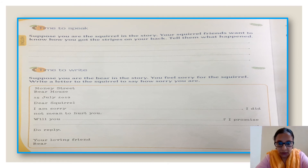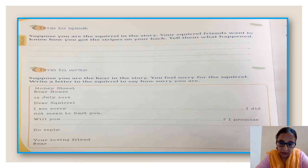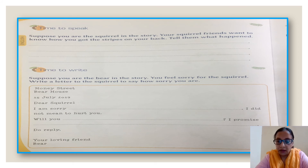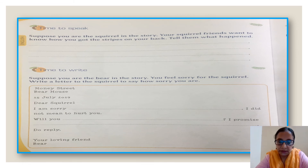Time to speak — this is a speaking activity, students. Please I want you all to do this. Suppose you are the squirrel in the story. Your squirrel friends want to know how you got the stripes on your back — tell them what happened. Just narrate what happened in the story: the bear was very angry with me, and in anger he scratched my back with his sharp claws, and that is how I got the stripes on my back. Please do this activity and send it to me — last time only three students did the speaking activity, and this time I don't want that.